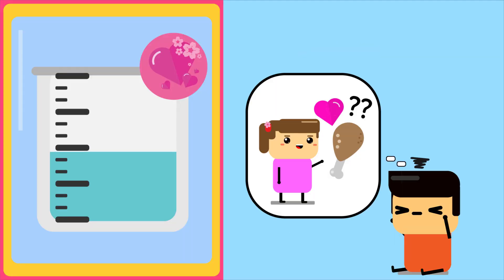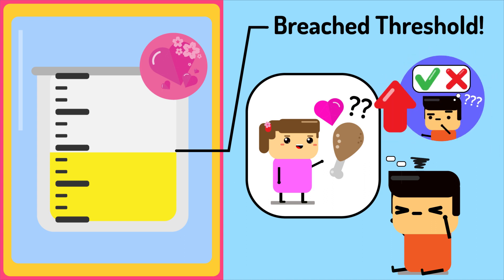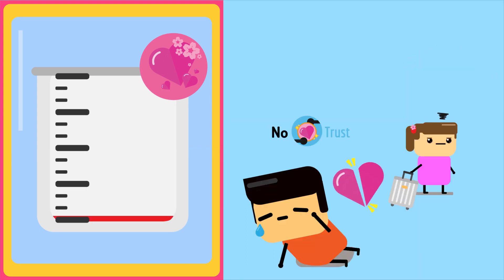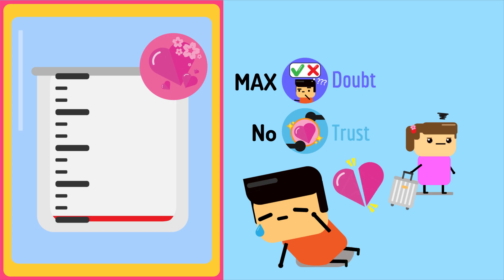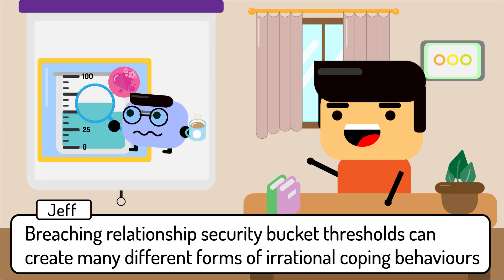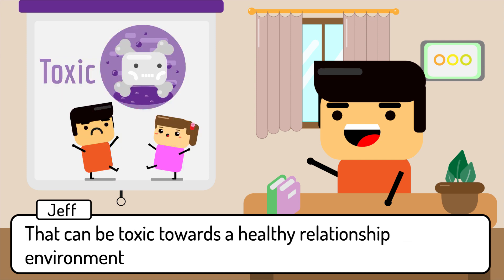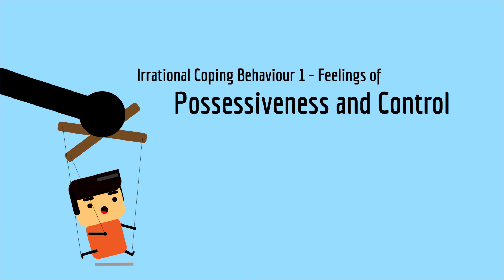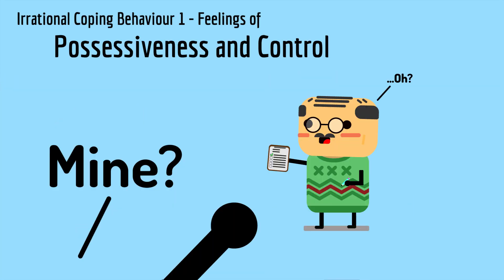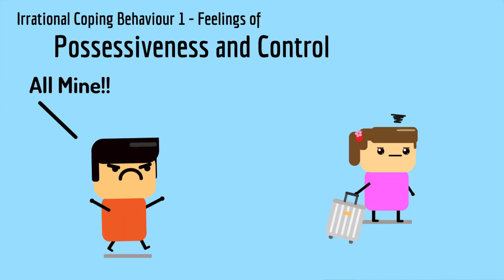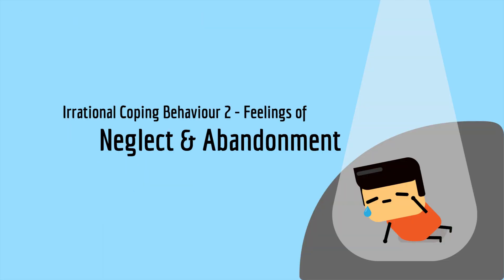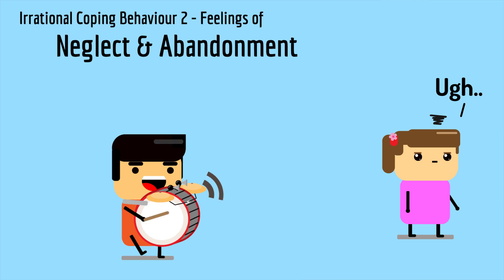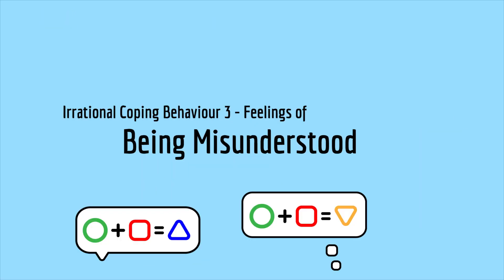Once the threshold is breached, we develop fears and doubts against each other, lacking the ability to trust, leading to fear of losing one another. Breaching relationship security bucket thresholds can create many different forms of irrational coping behavior that can be toxic — such as feelings of possessiveness and control, feelings of neglect and abandonment where you crave attention to feel validated, and feelings of being misunderstood where things are not properly communicated.